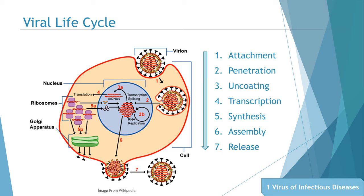Transcription: The transcription mechanism depends on the viral genome. DNA viruses usually use host cell proteins and enzymes to make additional DNA that is transcribed to messenger RNA, which is then used to direct protein synthesis. RNA viruses usually use the RNA core as a template for the synthesis of viral genomic RNA and mRNA.